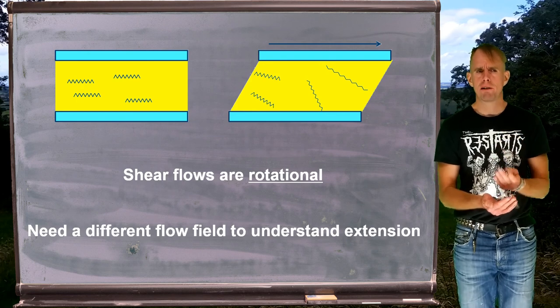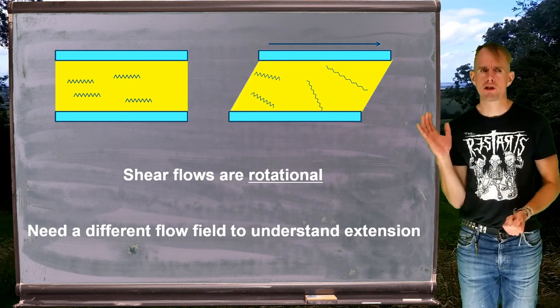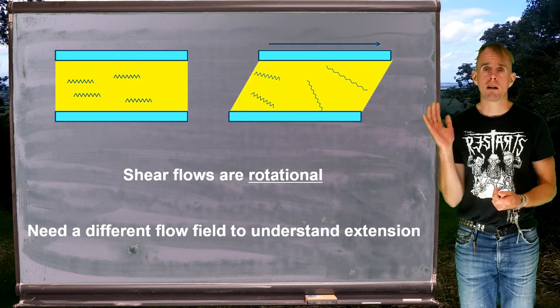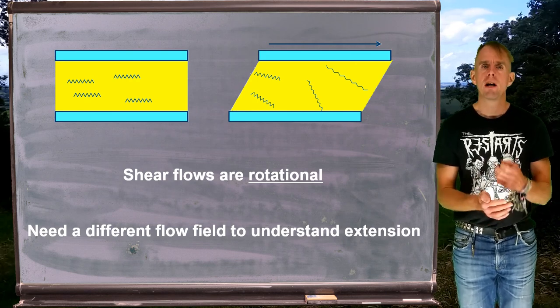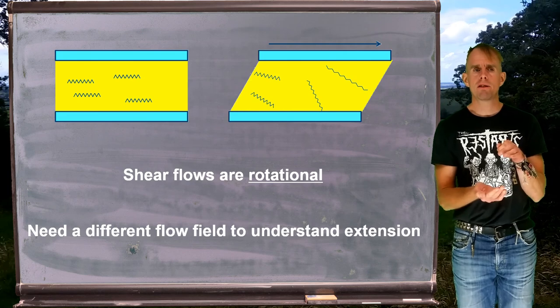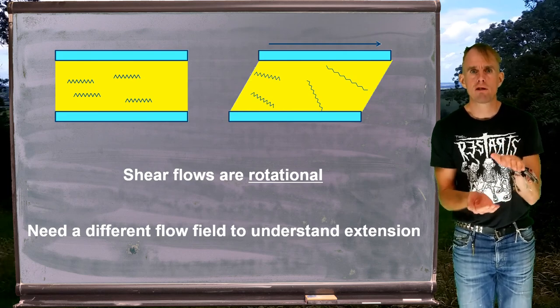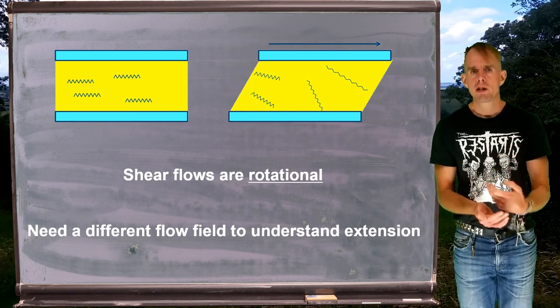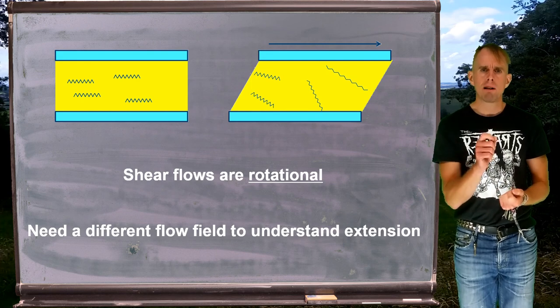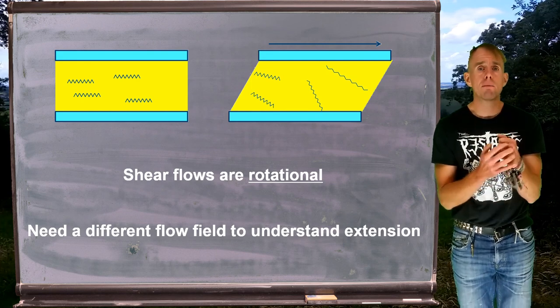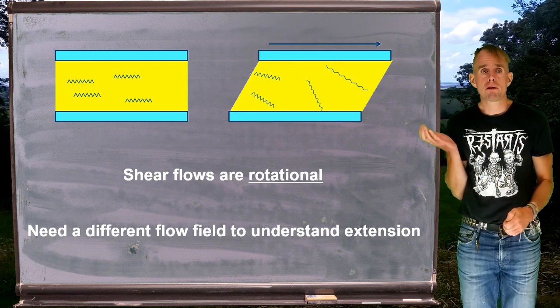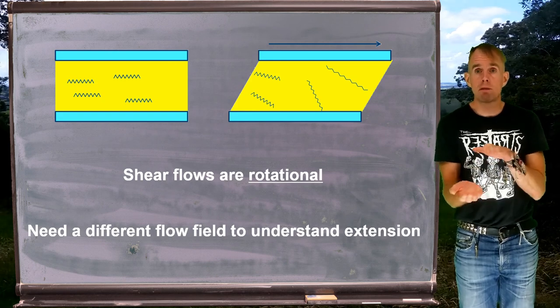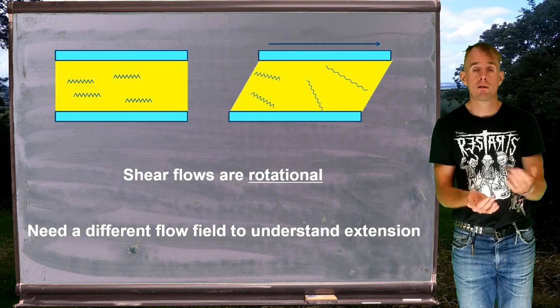However, for complex fluids, fluids with some kind of structure, and in this case, we'll have a look at those wiggly lines in the yellow fluid, which are a schematic representation, grossly oversized, of a polymer chain. We can see that a shear flow will change the conformation or the nature of these polymer chains. The reason why is that shear flows are rotational.